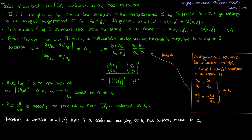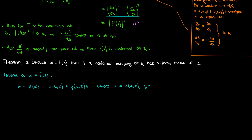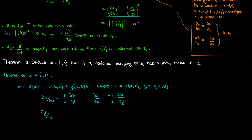So we've proven that a conformal mapping automatically has a local inverse at the point. This inverse can be written as z equals g of w, where g of w is given by x plus yi, with x and y both being functions of u and v. These functions of u and v are continuous, and their partial derivatives can be written in terms of the partial derivatives of u and v with respect to x and y, where j is the Jacobian determinant of the original function f of z.